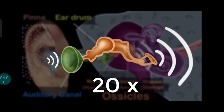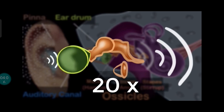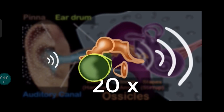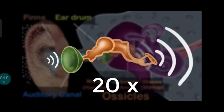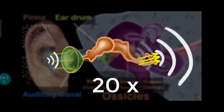But how do they do that? Just look at the base of the stapes — it has such a small area compared to that of the eardrum. So when the force gets transmitted from the eardrum to the stapes, it gets concentrated in a very tiny area. And when you concentrate force in a very tiny area, you increase its pressure.